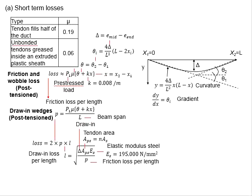Next is the losses due to the drawing of the wedges. This kind of loss is related to the post-tension member, particularly related to the anchorage of the steel tendon in the member.